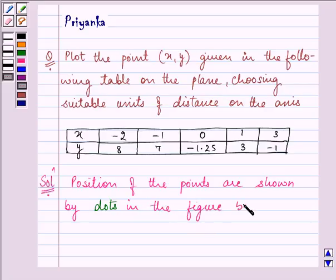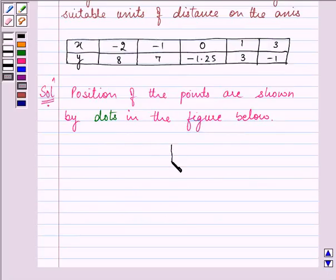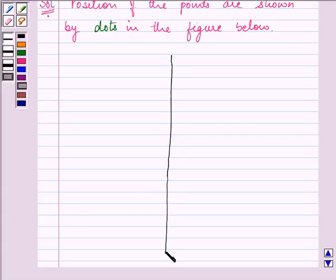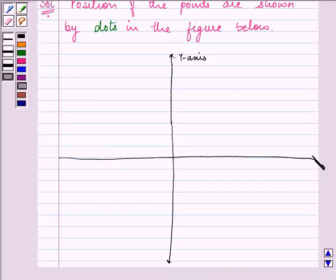Now let us draw the x axis as well as the y axis. This is the y axis and this is the x axis. Now let us plot the points according to the points which are given to us.